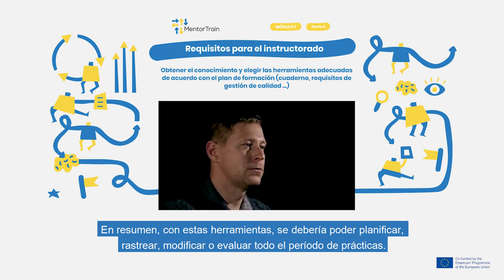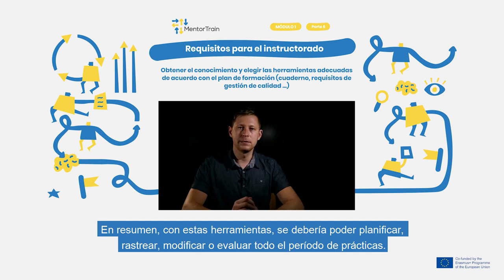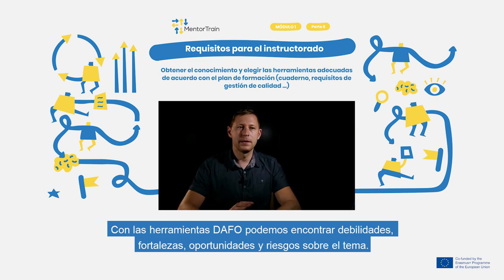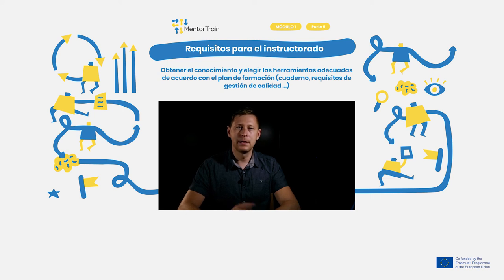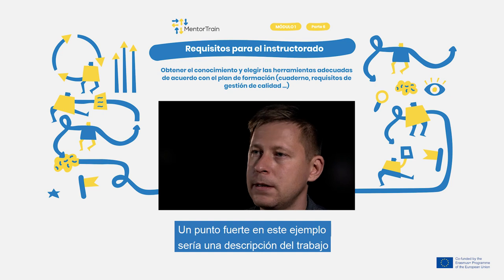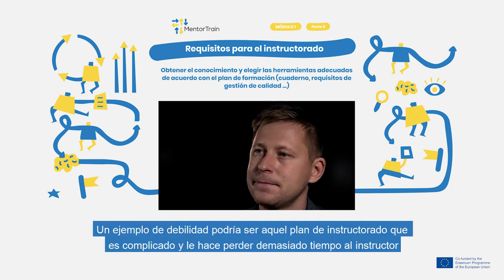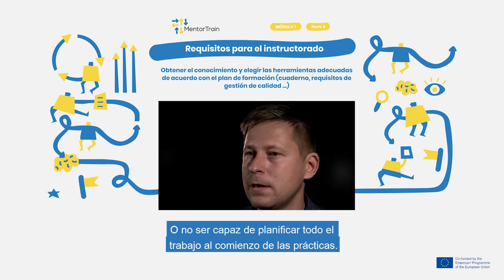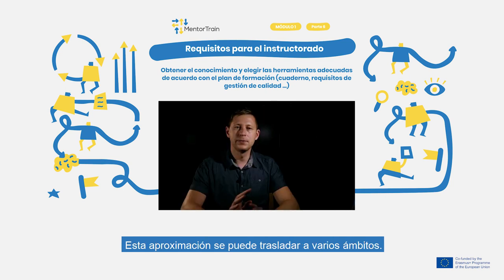In conclusion, with the tool you must be able to follow, plan, change, and evaluate the role of the apprenticeship. For example, we can use SWOT for analyzing the mentorship plan. In a SWOT analysis, we find the strengths, weaknesses, opportunities, and threats of the topic we want to analyze. In this example, strengths could be a detailed description of tasks, while a weakness could be that the mentoring plan is very complex and takes a lot of time for the mentor, or that it's not possible to plan all tasks at the beginning of the apprenticeship.